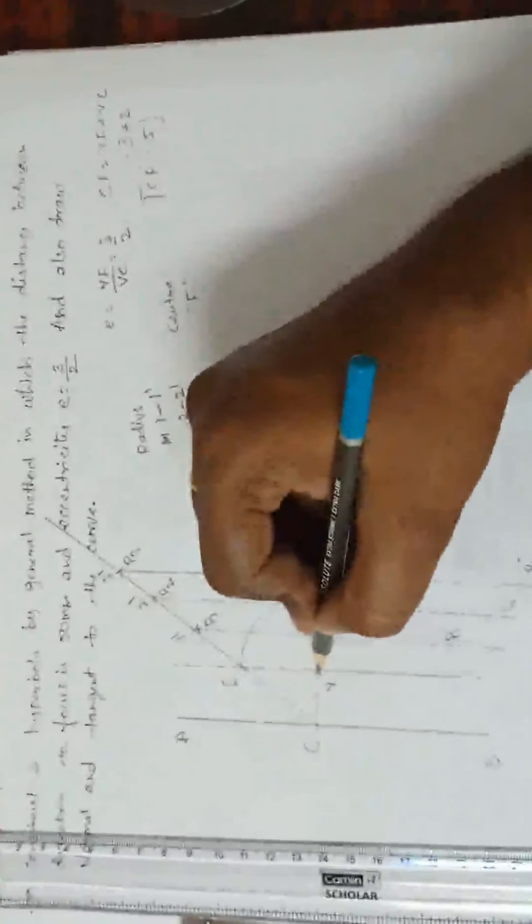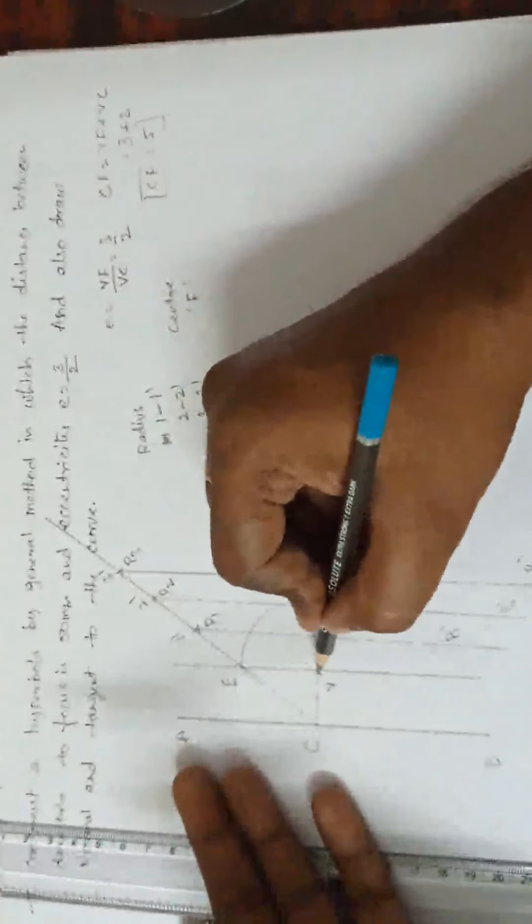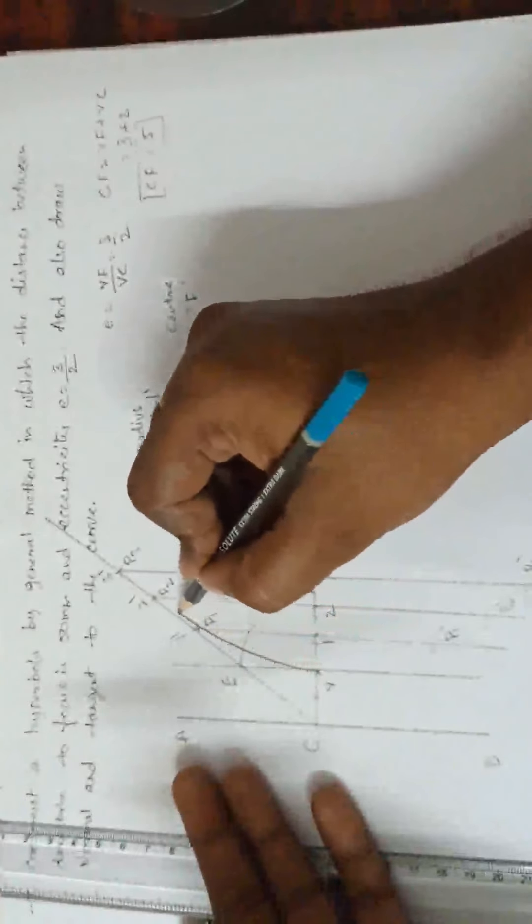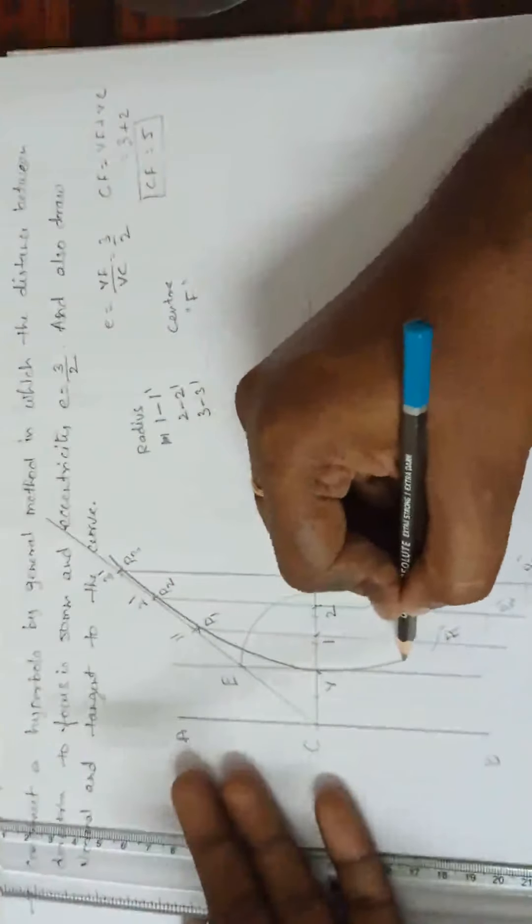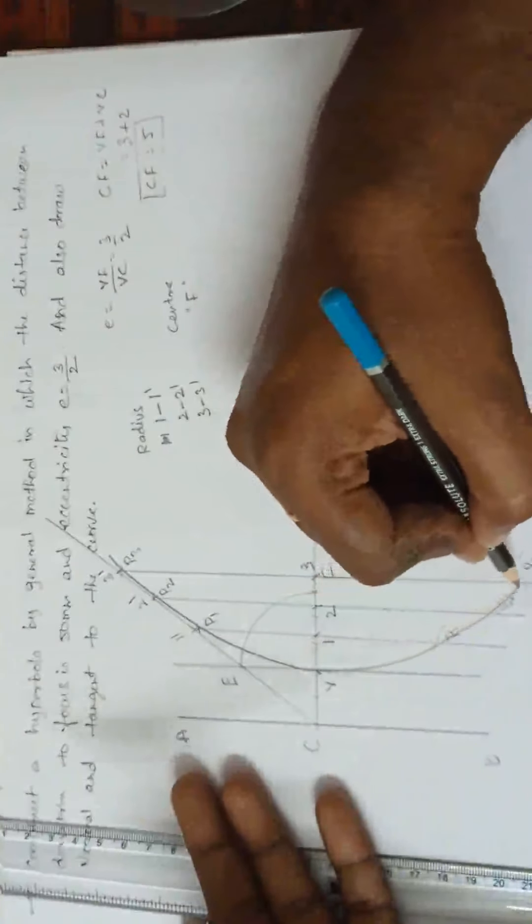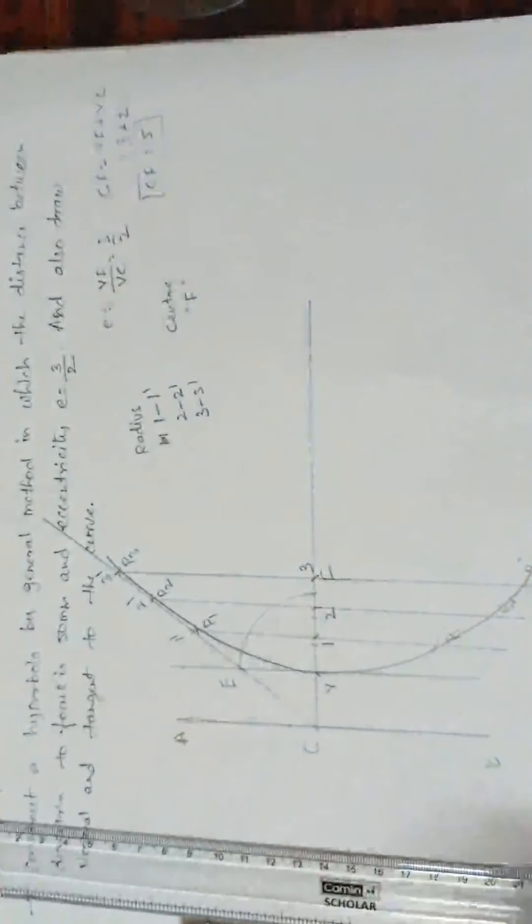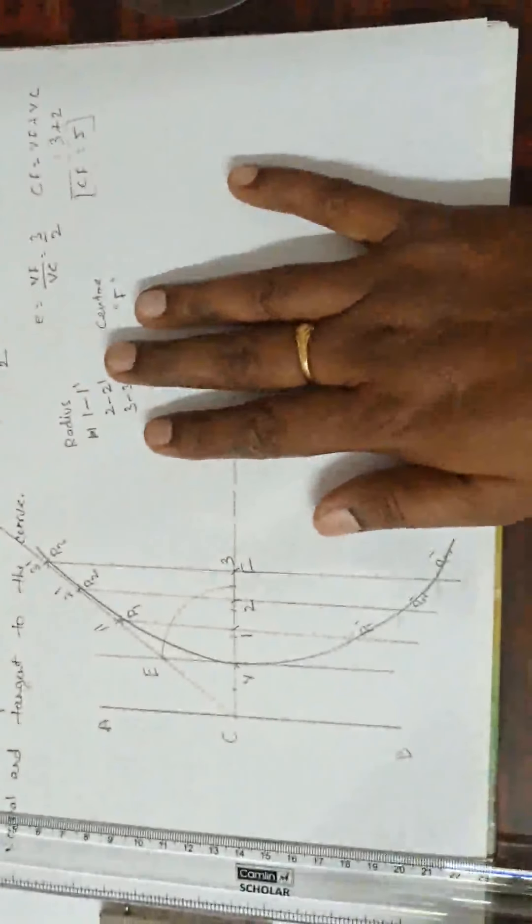Now, from the vertex, from the vertex, join this curve lines. The curve will get is hyperbola. Done. The curve will get is hyperbola. Is this clear?